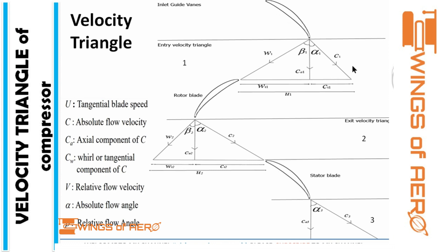What is C? C is the absolute flow velocity. W is the relative flow velocity. CT1 is the tangential component of absolute flow, and WT is the tangential component of relative flow velocity. CA is the axial component of absolute flow velocity — it is the common connecting line between the absolute and the relative flow.